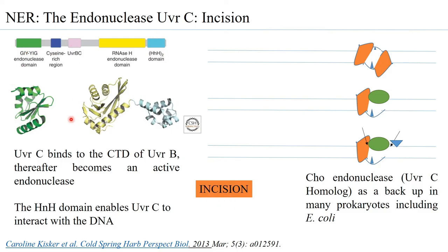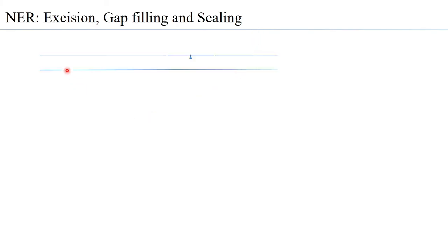Stepwise, the UVR-A-B-C complex has enabled first recognition of the damage, then verification of the damage, and then incision on the strand that has the damage. What happens next is the process of excision, then gap filling and sealing. With UVR-B and UVR-C carrying out incisions on both sides — at the three prime end and the five prime end of the DNA lesion — the next molecule to come in is UVR-D, which is a helicase with strong ATPase activity.